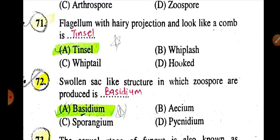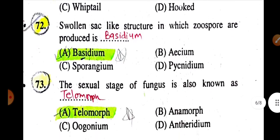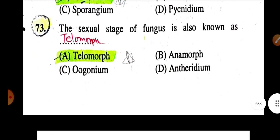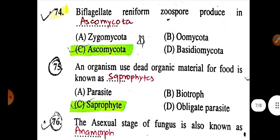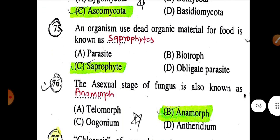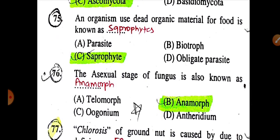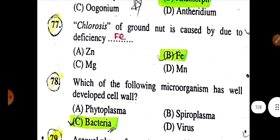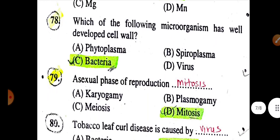A flagellum with hairy projections that looks like a comb is tinsel type. The swollen sac-like structure in which zoospores are produced is a vesicle. The asexual stage of fungi is also known as anamorph. Biflagellated reniform zoospores are produced by Oomycota. An organism that uses dead organic material for food is known as a saprophyte.